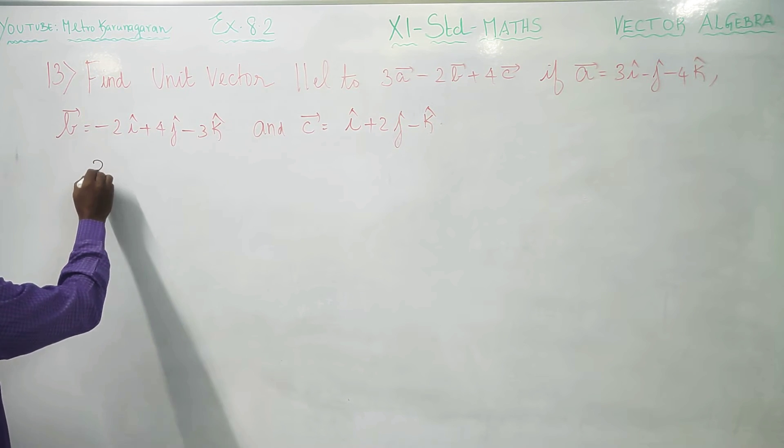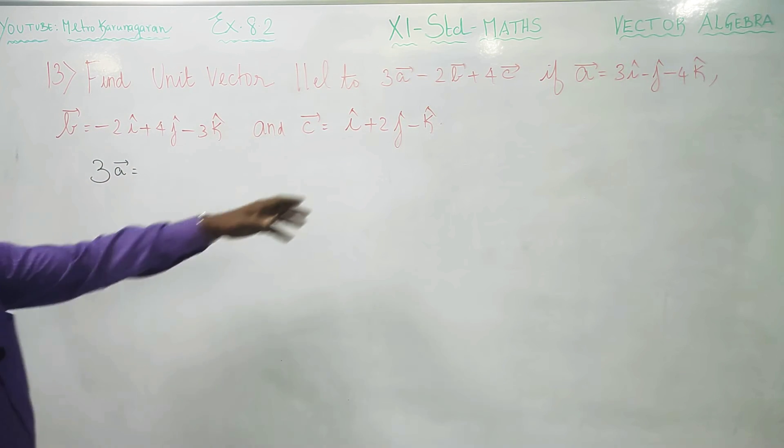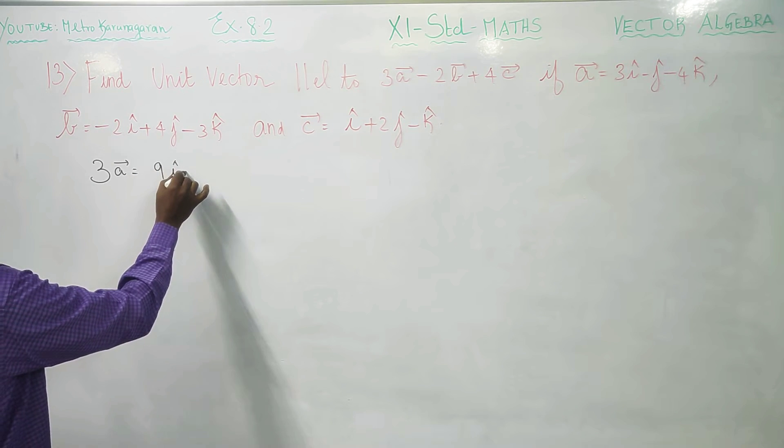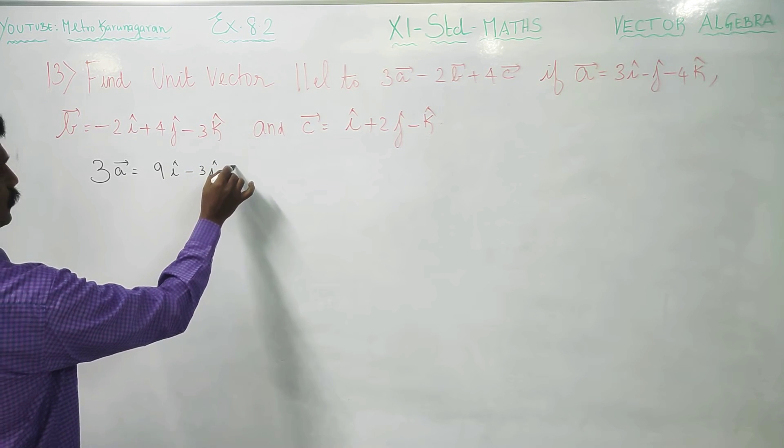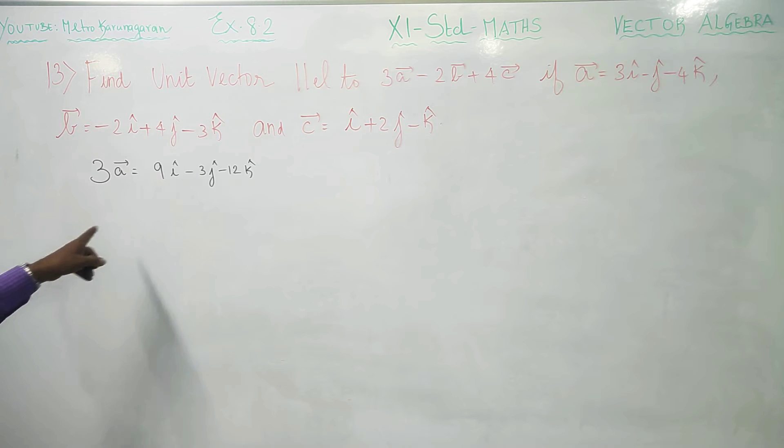First I will start with my 3a vector. You have to just multiply by 3 the a vector. You will be getting 9i vector minus 3j vector, 4 times 3 is 12k vector. This is my 3a vector.